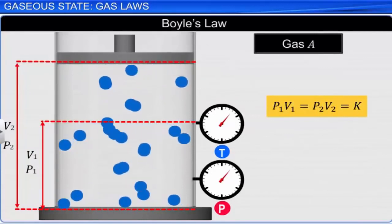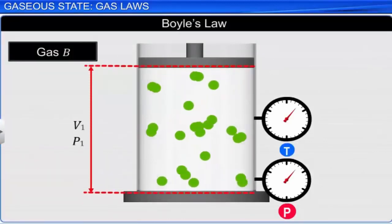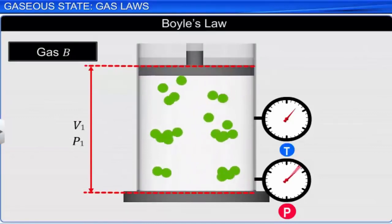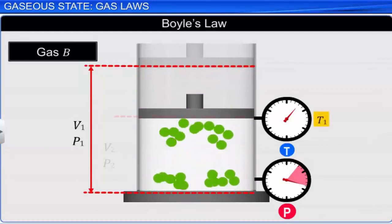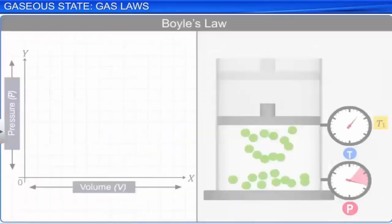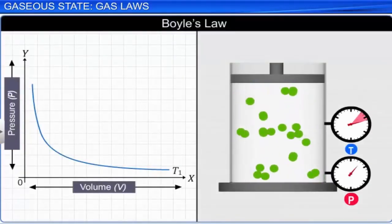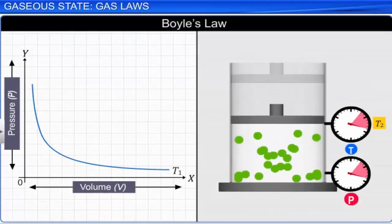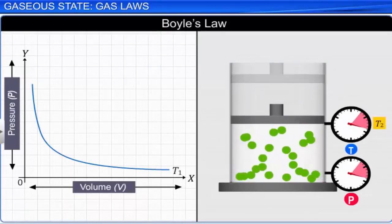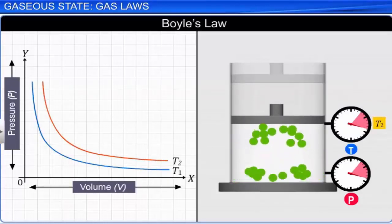Now consider N moles of gas B at pressure P1 and volume V1. Let us slowly increase the pressure, keeping the temperature constant at T1. We observe that the volume of gas decreases as the pressure increases. If we plot this variation of pressure versus volume on an XY graph, we get a curve. Let us now change the temperature to T2 and repeat the same process at constant temperature T2. In this case, plotting pressure versus volume gives a different curve.